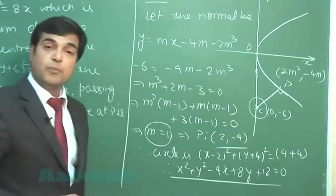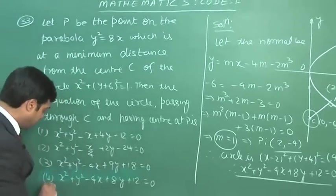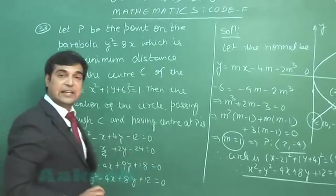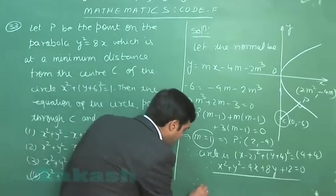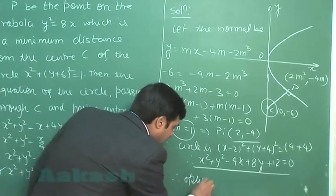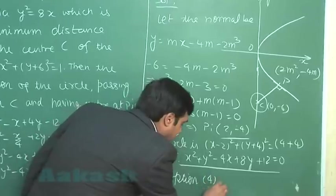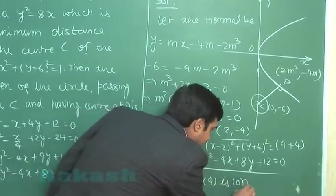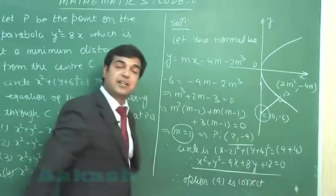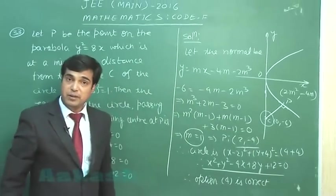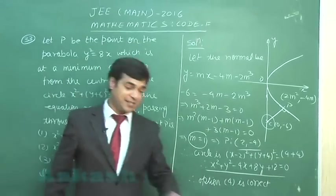From the options we can clearly see option number 4 is the correct key. Therefore, option 4 is correct. So this is clear how we obtain the solution part. Okay, let us move to the next one.